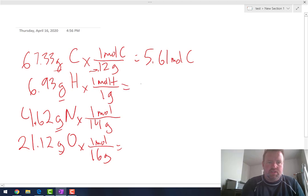67.33 divided by 12 equals 5.61 moles of carbon. Hydrogen, 6.93. And then nitrogen, 4.62 divided by 14 equals 0.33 moles of nitrogen.